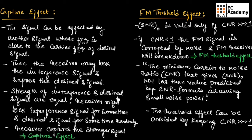If the strength of the interference signal and the desired signal are equal, the receiver might lock the interference signal for some time and the desired signal for some time, randomly. Finally, the receiver may capture the stronger signal between the interference signal and the desired signal. This effect is known as capture effect.